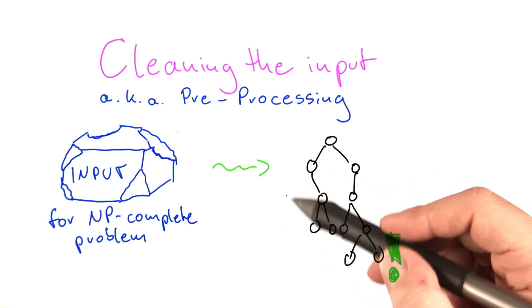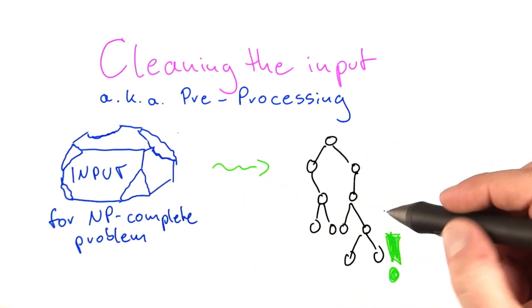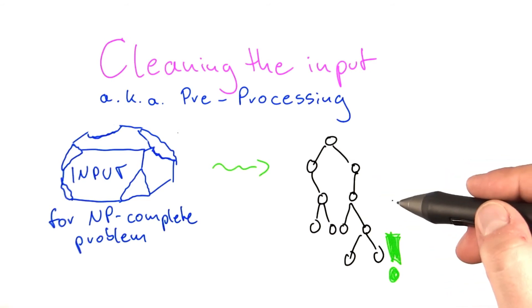So we can, for example, cut off this branch here because we've already preprocessed this. And we can cut off this one here because we also preprocessed that one.